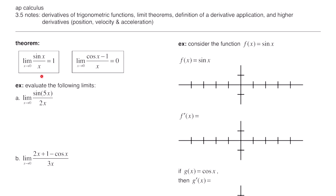Our first couple of theorems: the limit as x goes to 0 of sine of x over x equals 1. We also have the limit as x goes to 0 of cosine of x minus 1 all over x equals 0. We're going to use these theorems to evaluate the next two problems.